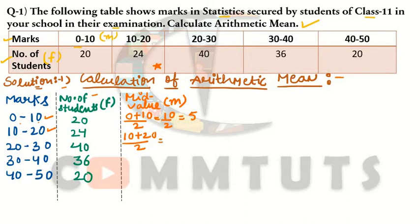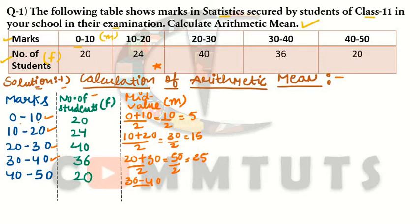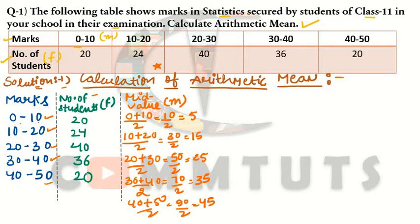For the class 10–20: (10 + 20) ÷ 2 = 30 ÷ 2 = 15. For 20–30: (20 + 30) ÷ 2 = 50 ÷ 2 = 25. For 30–40: (30 + 40) ÷ 2 = 70 ÷ 2 = 35. For 40–50: (40 + 50) ÷ 2 = 90 ÷ 2 = 45. This is how we calculate mid values for all classes.